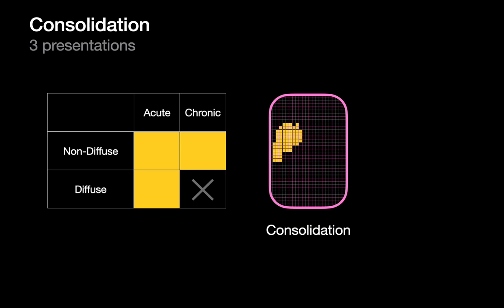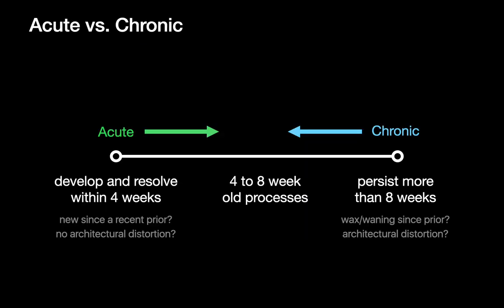When it comes to non-diffuse, it could be one focus of consolidation in one lung, or multiple foci in both lungs distributed in a haphazard way with areas of sparing in between. So in terms of interpretation we'll find ourselves in one of three situations: acute non-diffuse consolidation, acute diffuse consolidation, and chronic non-diffuse consolidation. Chronic diffuse consolidation is very unlikely — probably not compatible with life.